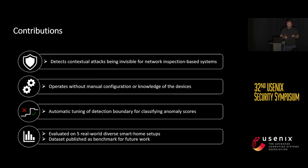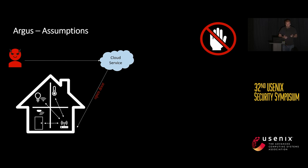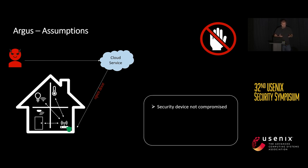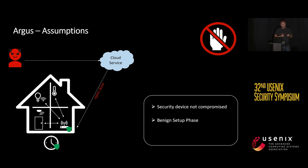We evaluated Argus on five real-world datasets that we collected, and published this dataset as part of the artifact appendix to be available as a benchmark for future work. Regarding assumptions: we assume the security device where Argus is running is not compromised, we assume a benign setup phase where we can observe regular behavior of the IoT devices with no attacks performed, and both assumptions are quite typical for IoT security work.